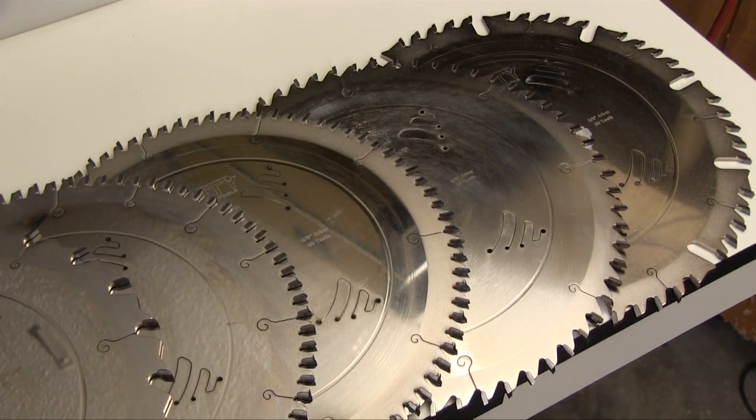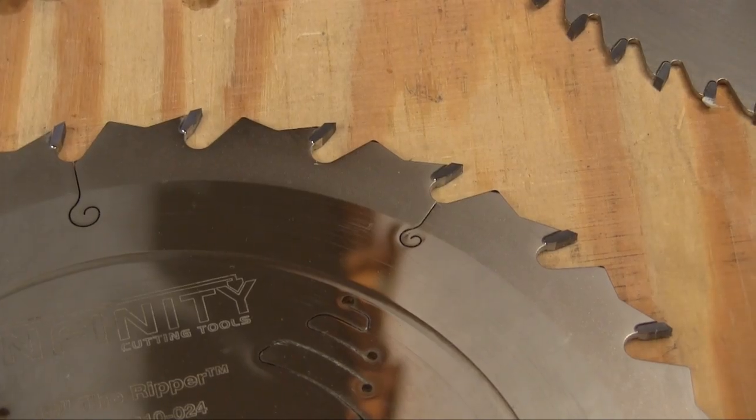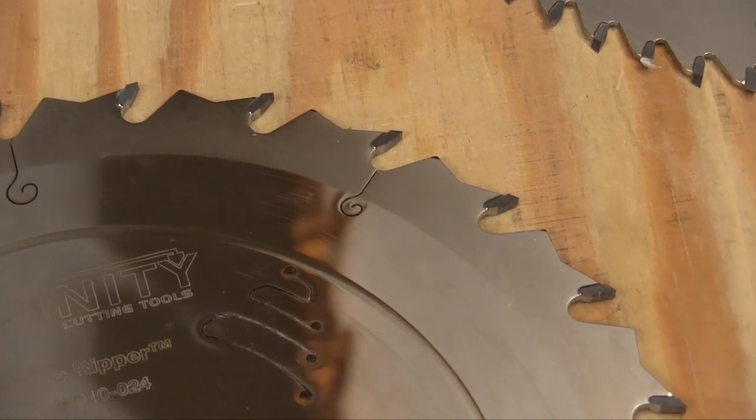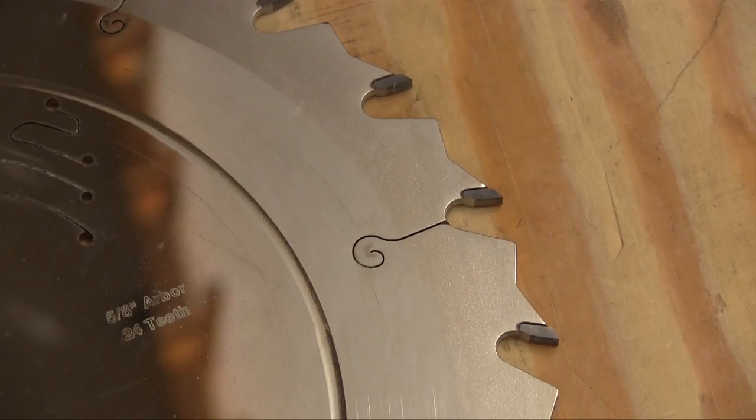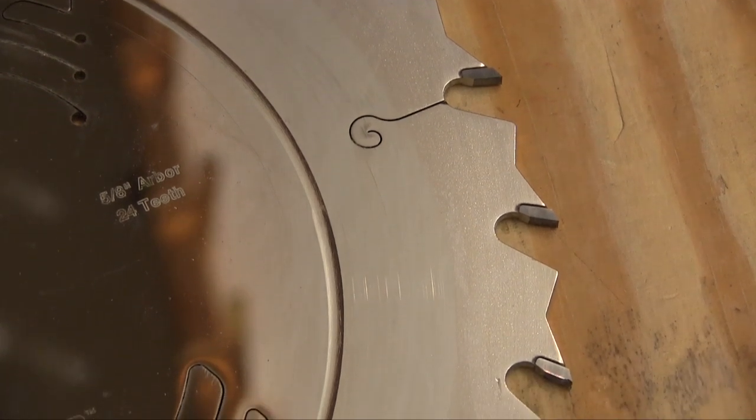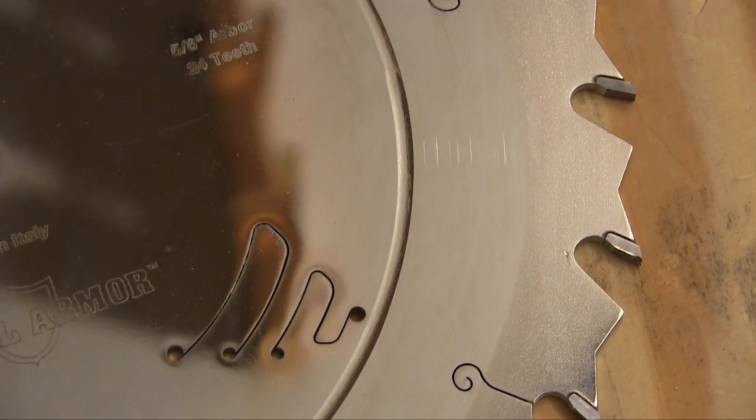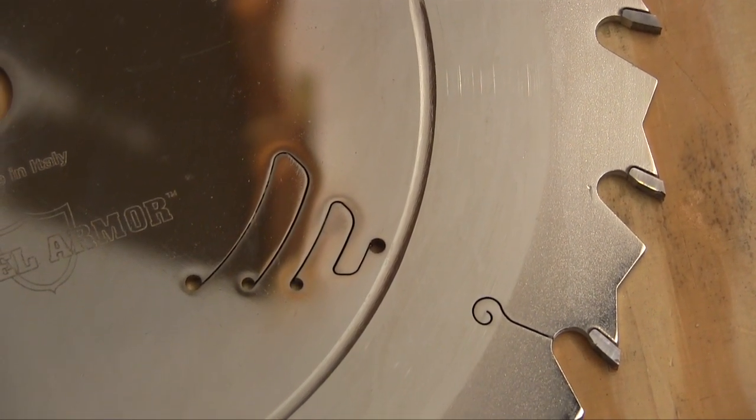The Infinity Tools saw blades are made in Italy. The Infinity saw blade bodies are precisely cut using industrial lasers. Those same lasers make the expansion cuts around the outside of the blades and these anti-vibration cuts a little closer into the centers.